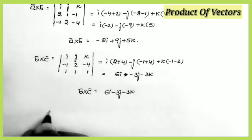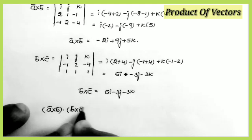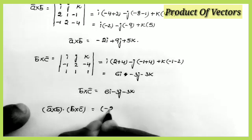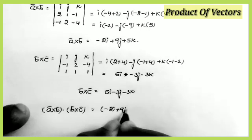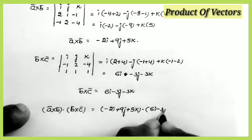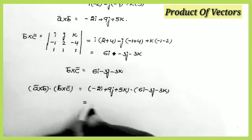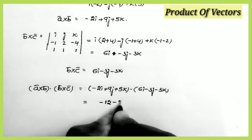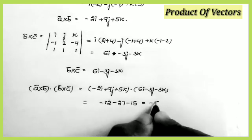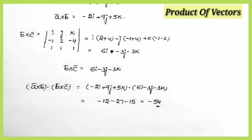Now we want the dot product (a×b)·(b×c). Taking (−2i + 9j + 5k)·(6i − 3j − 3k): (−2)(6) + (9)(−3) + (5)(−3) = −12 − 27 − 15 = −54. This is a very very important problem — make sure all of you understand it.